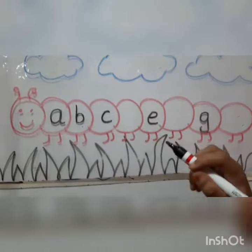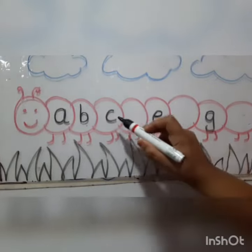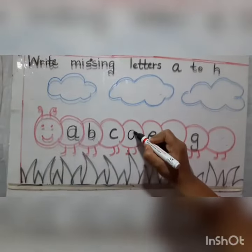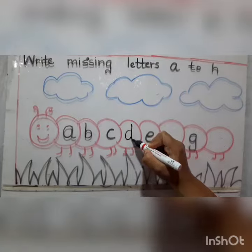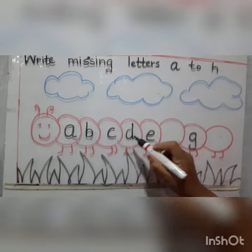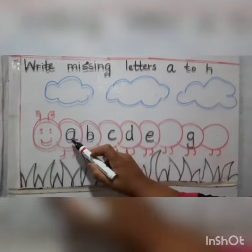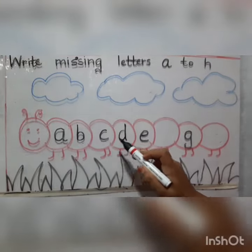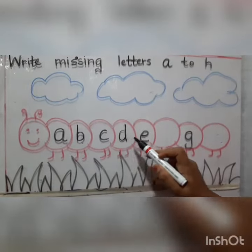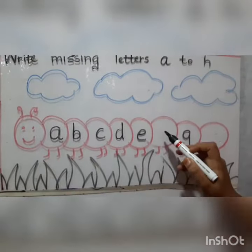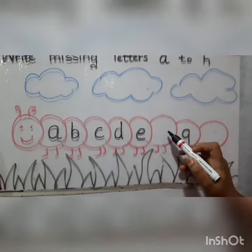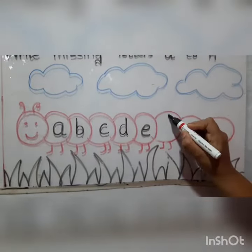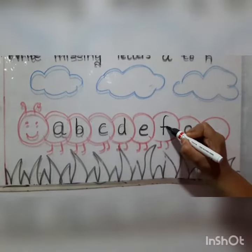Then what comes after C? Letter D. Look Corrie, you got one more letter. Let's read: A, B, C, D, E. What comes after E? Letter F.